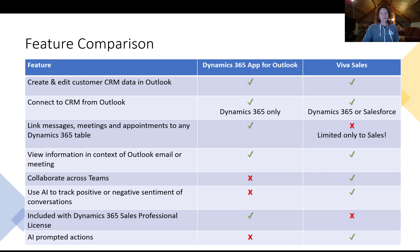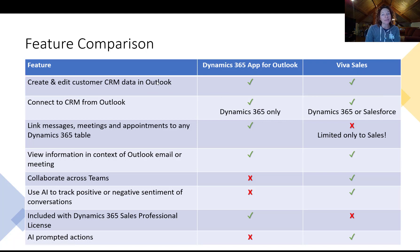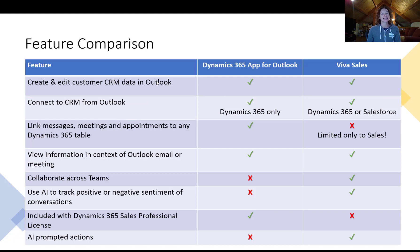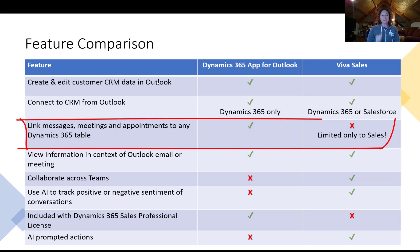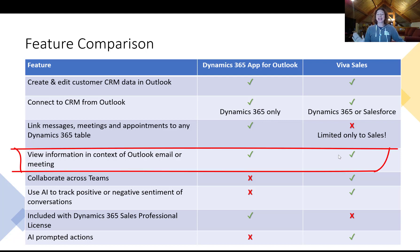Here's the feature comparison — my first stab at this. Feature one: create and edit customer data in Outlook — you can do that in both the App for Outlook and Viva Sales. On CRM connectivity: the Dynamics App for Outlook is only for Dynamics 365, while Viva Sales actually supports both Salesforce and Dynamics 365. On linking meetings and appointments to any Dynamics 365 table — that's the Dynamics App for Outlook. Viva Sales, as Microsoft noted, is limited only to sales entities.